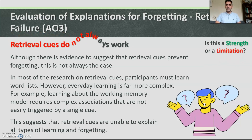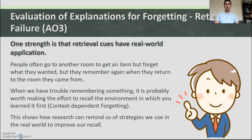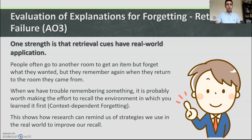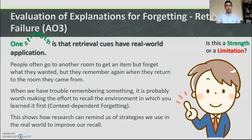One strength is that retrieval cues have real world application. People often go to another room to get an item but forget what they wanted, yet remember again when they return to the room they came from. When we have trouble remembering something it is probably worth making the effort to recall the environment in which we learned it first — context dependent forgetting. This shows how research can remind us of strategies we use in real life to improve recall. Real world application is a strength.